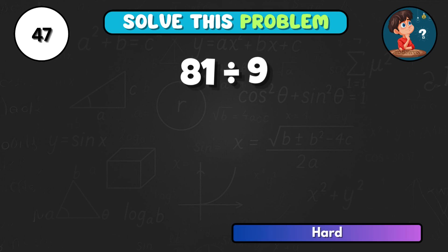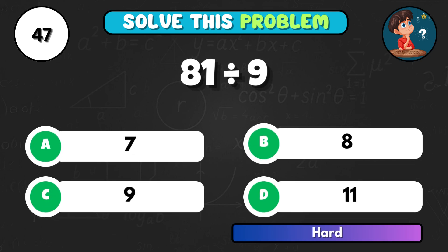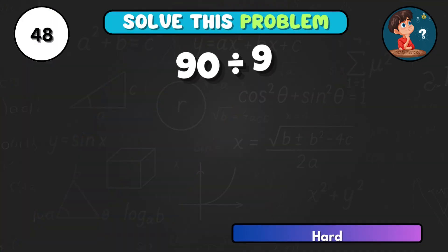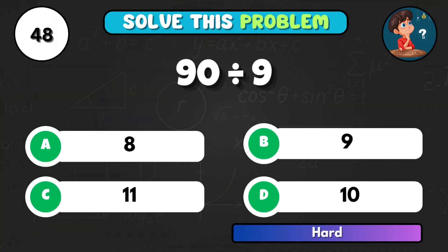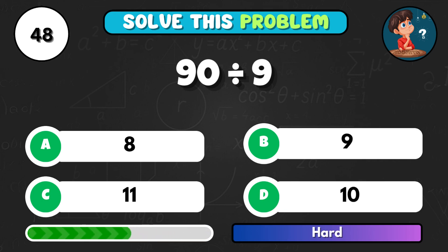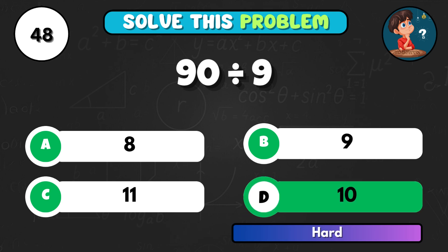81 divided by 9, what's the outcome? That's C equals 9. 90 divided by 9, what's your total? Correct choice D equals 10.